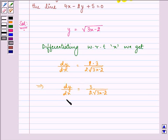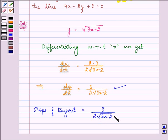dy by dx at point x and y is found out to be this. So that means slope of tangent will be equal to 3 upon 2 under root 3x minus 2.